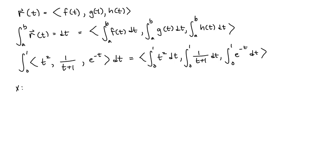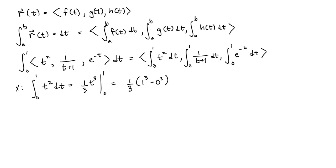Let's start with the x component. The definite integral from 0 to 1 of t squared dt equals 1/3 t cubed, evaluated from 0 to 1. This is 1/3 times 1 cubed minus 0 cubed, which equals 1/3 for the x component.